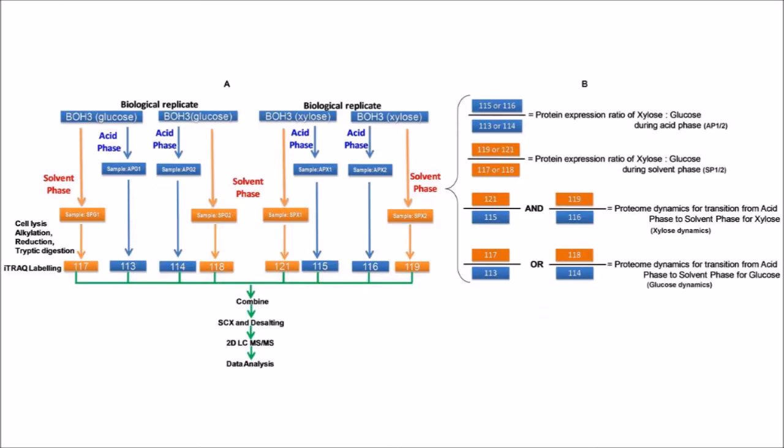An iTRAQ-based proteomics investigation was therefore performed with this bacteria at different stages of fermentation. Samples were taken at different time points from the fermentation: mid-acidogenic phase, late acidogenic phase and mid-solventogenic phase. In this study, isobaric iTRAQ tags were used to label the bacterial proteins as shown in this figure, such that different iTRAQ ratios could yield valuable information like the expression ratio of proteins at different stages of fermentation, whilst using glucose and xylose as the carbon source, as well as reveal substrate-specific protein dynamics.